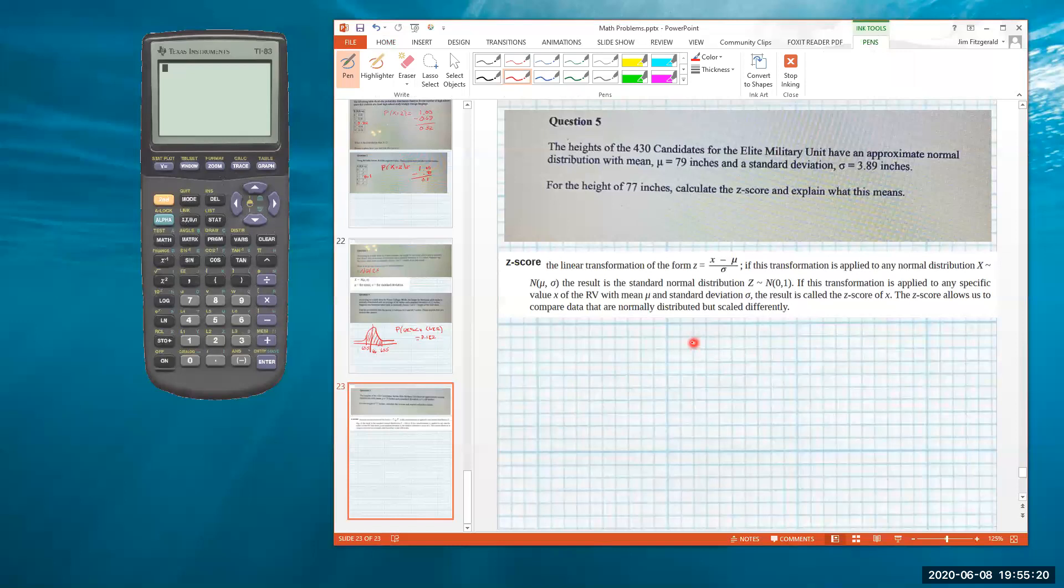So a positive z-score represents a value that's to the right of the mean on a standard distribution, and a z-score that is negative shows you or indicates that it's less than the mean value.